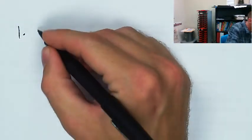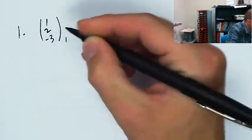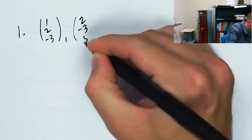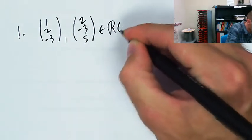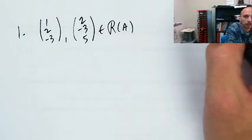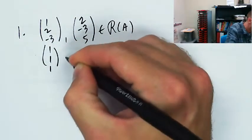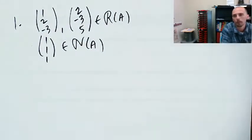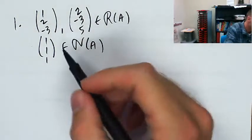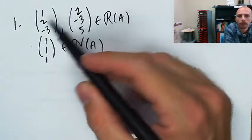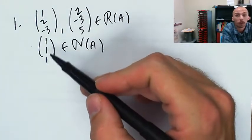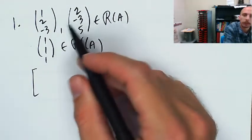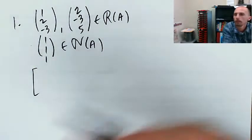The first one is that vectors [1, 2, -3] and [2, -3, 5] are in the column space (range) of matrix A, and the null space contains [1, 1, 1] — so [1, 1, 1] is an element of the null space of A. Since the range elements are 3-dimensional and the null space element is also 3-dimensional, it has to be a 3x3 matrix. The easiest way to have those two vectors in the column space is to make them columns of A.